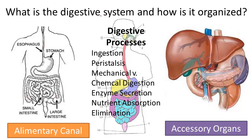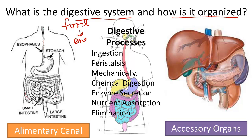So what is the digestive system and how is it organized? The purpose of the digestive system is digestion — to break down food into smaller pieces for use by all cells in the body.